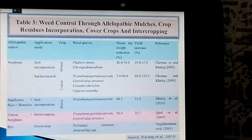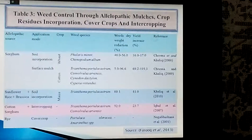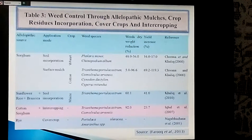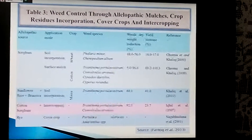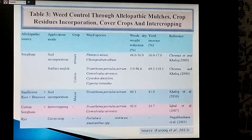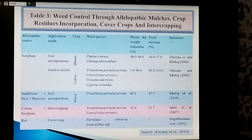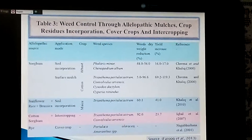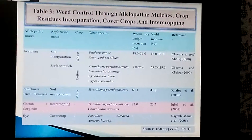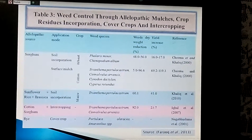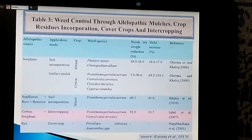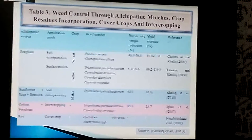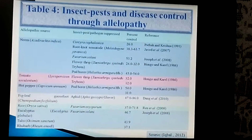Table 3 shows weed control through allelopathic mulches, crop residue incorporation, cover crops, and intercropping. Sorghum residue incorporated into a wheat field suppresses Phalaris minor and Chenopodium album, reducing weed weight 48 to 56% and increasing yield 16 to 17%. Sunflower, rice, and brassica applied directly into soil control Trianthema portulacastrum, reducing weed weight up to 60.1% and increasing yield up to 41%. Cotton and sorghum intercropping reduces weeds — Trianthema portulacastrum and Convolvulus arvensis — with weed weight reduction up to 92%, making it a very feasible and economically profitable practice.